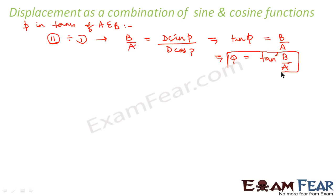So, this is the value of φ in terms of given A and B. So, what did we see in this entire topic? We saw that a displacement can be represented as a sine function, as a cosine function, as well as, as a combination of sine and cosine functions.